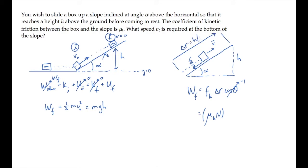It's equal to h, the height, over sine of alpha, because from the ramp's geometry, sine of alpha equals h over delta r.